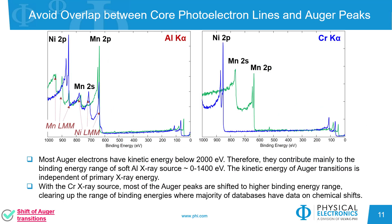Other features of HAXPES include the ability to shift Auger peaks, since the kinetic energy is independent of the primary X-ray energy. In this example, manganese and nickel Auger peaks overlap the main photoelectron peaks using an aluminum X-ray. But with the chromium X-ray, the Auger peaks are shifted, making the photoelectron peak analysis much more straightforward.